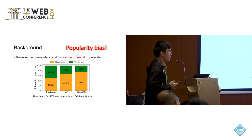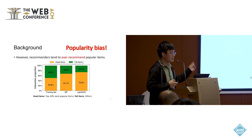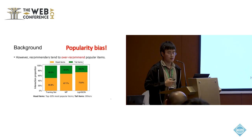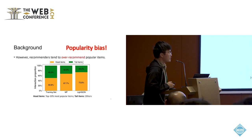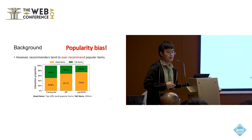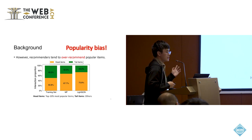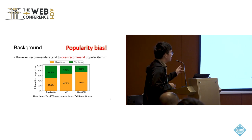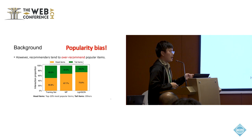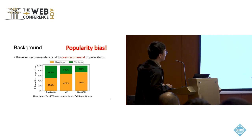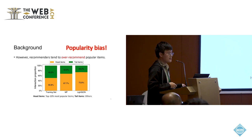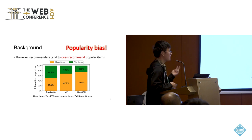In recommender systems there is a very popular phenomenon we call popularity bias — recommendation systems usually over-recommend popular items. We did an experiment on the MovieLens dataset. Head items, meaning the top 10% most popular items, account for around 50% of interactions in the training set.